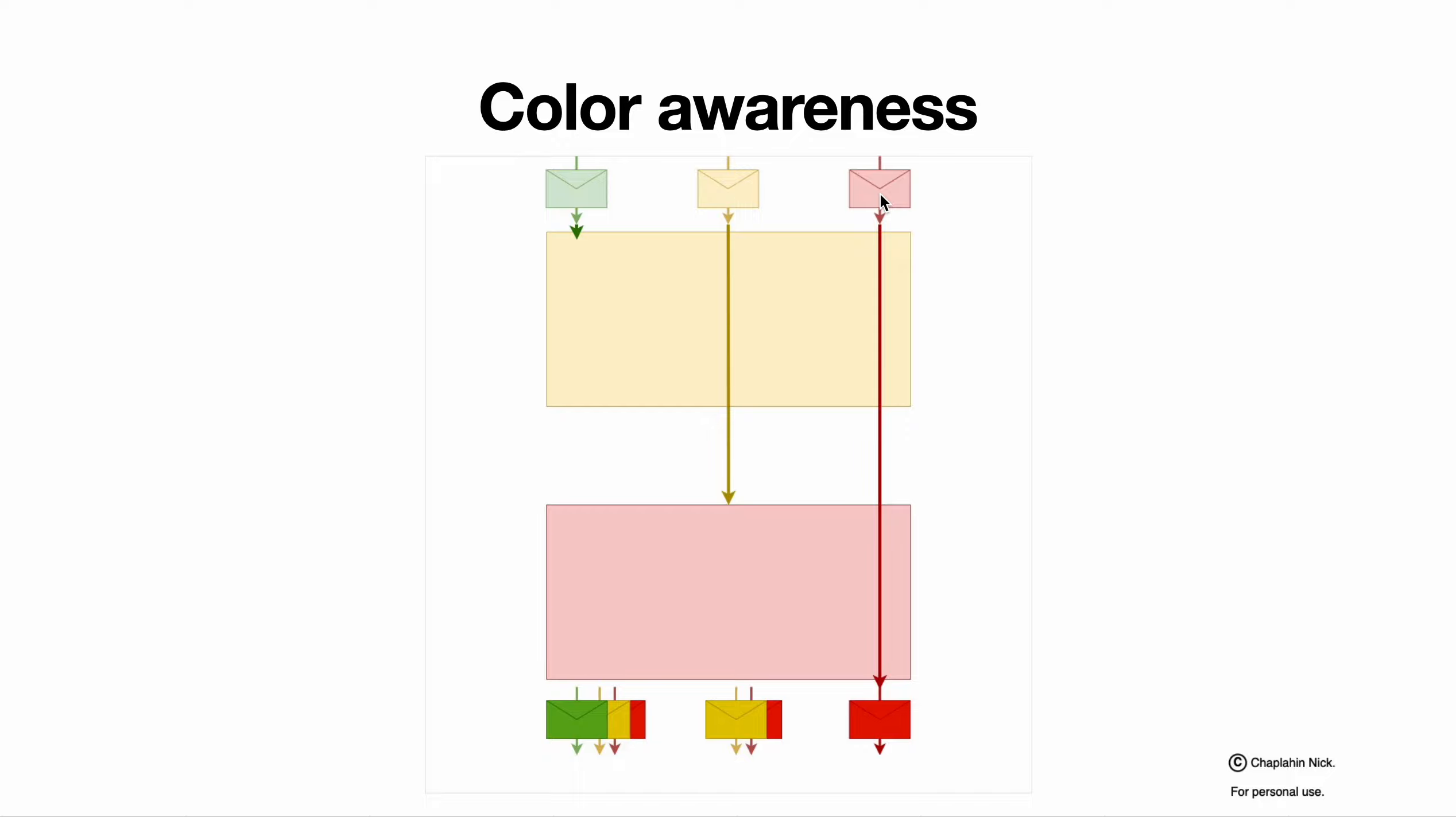So if packet is pre-colored as red, it's red and we don't care. If packet is colored as yellow, we compare it with red threshold, because it can become only red or stay yellow. And only if packet is pre-colored as green, it is compared towards both thresholds, because it can stay green or become yellow or red. This is all you need to know about color awareness.